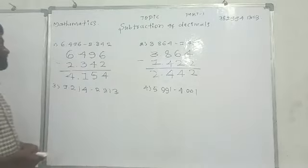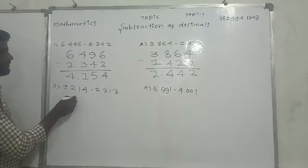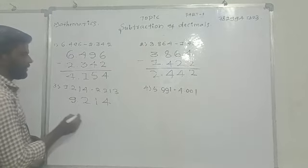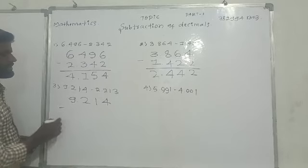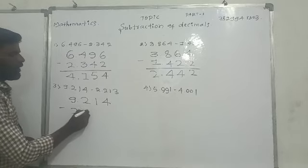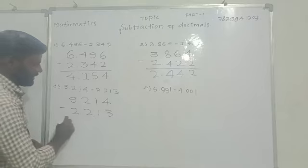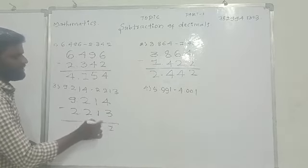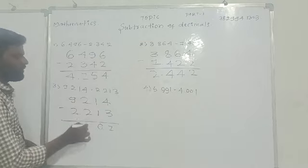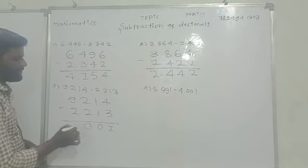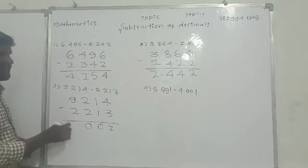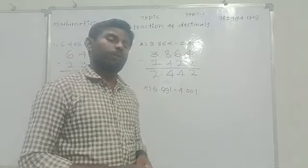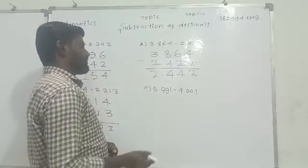Let's come to the third question. 9.214 minus 2.213. Yes. 4 minus 3 is 1. 1 minus 1 is 0. 2 minus 2 is 0. Decimal point, 9 minus 2 is 7. Answer is 7.001.